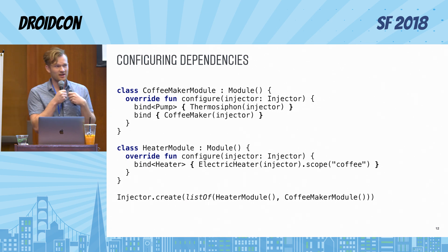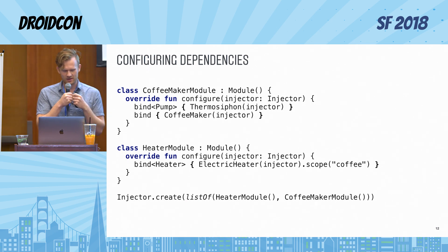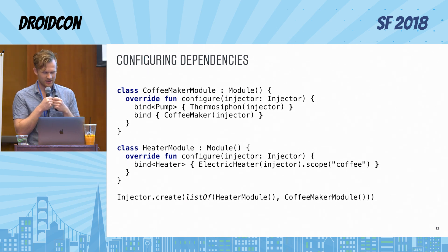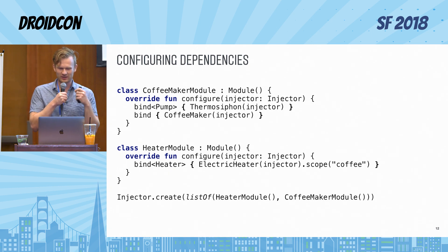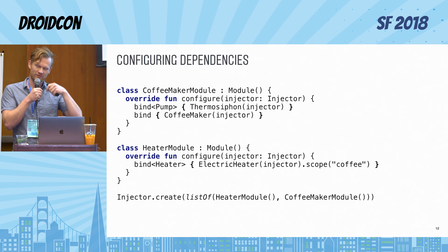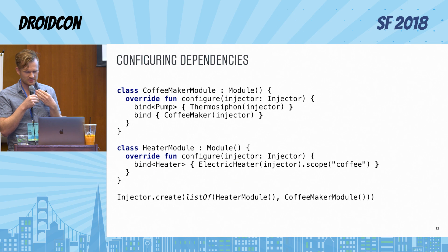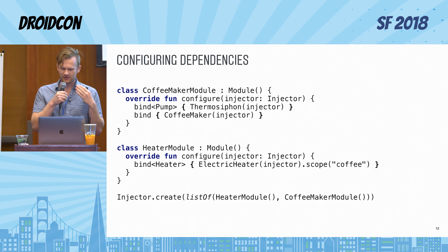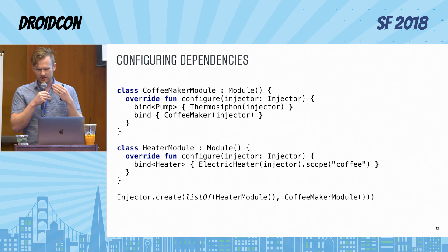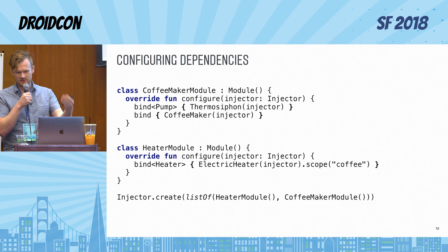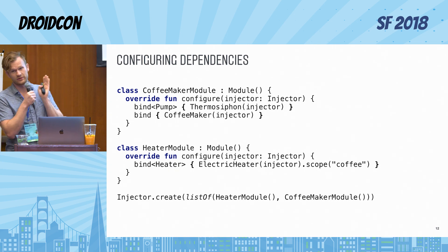Injector uses what I would call a monograph technique — you create your injector very early on and supply all existing modules. This is possible and won't hurt performance because everything that injector does going forward is actually lazy. Instance management is addressed using scopes, which I will cover on the next slide.